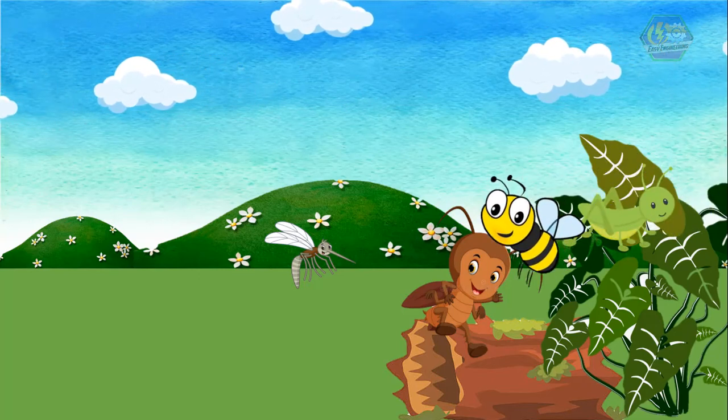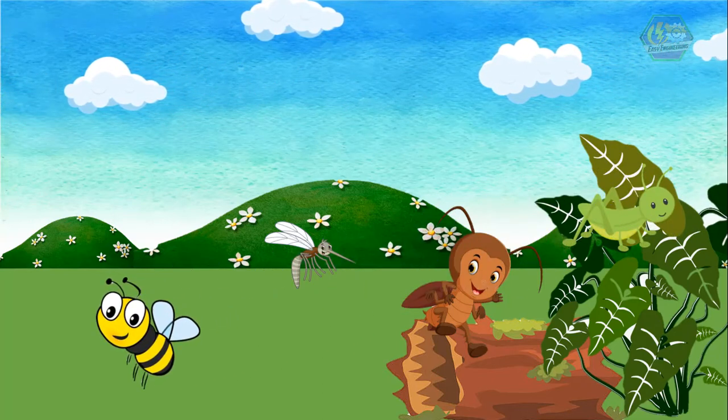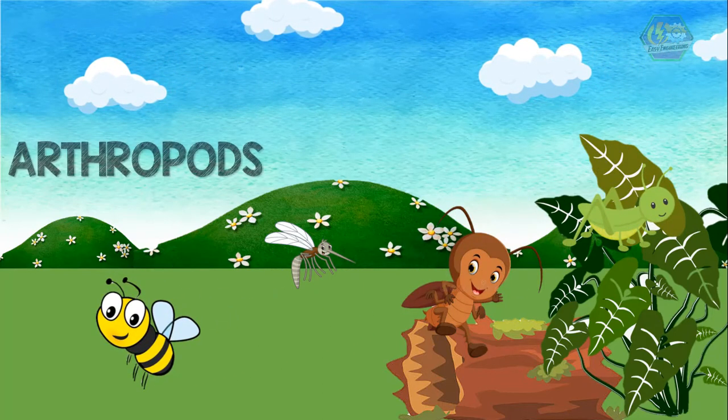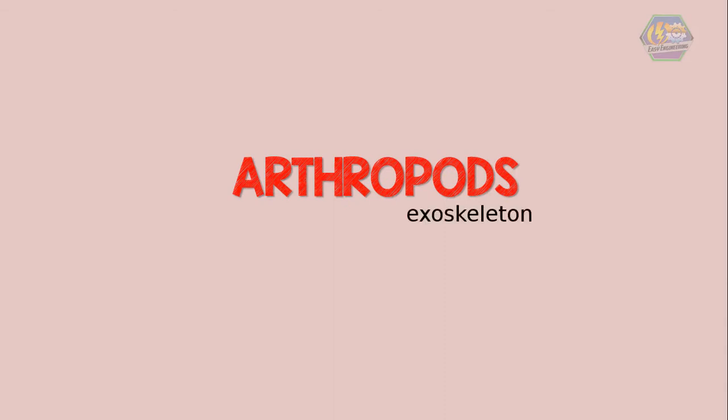They make up the largest group of animals on earth, the arthropods. Let's find out what they really are. Arthropods are animals that have a hard outside covering called an exoskeleton. But arthropods aren't all just insects. They also include the crustaceans and arachnids.